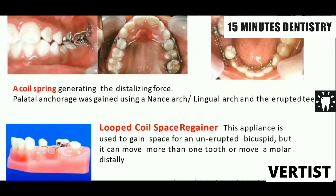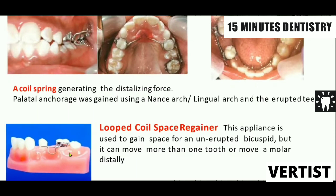Another method uses coil springs, where the coil spring is used either in the maxilla or mandible to regain space by separating the teeth from each other. Simultaneously, a modification of a nance holding arch or lingual arch is used to provide anchorage so that no other tooth moves in an undesired direction. This use of a coil spring within a looped wire is known as a looped coil space regainer.